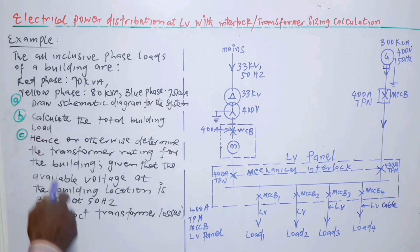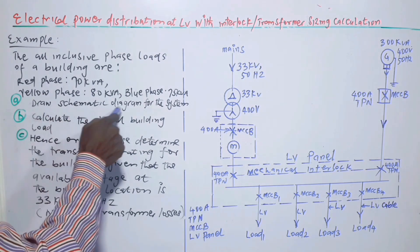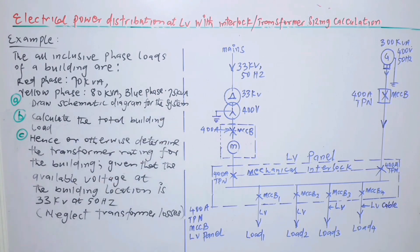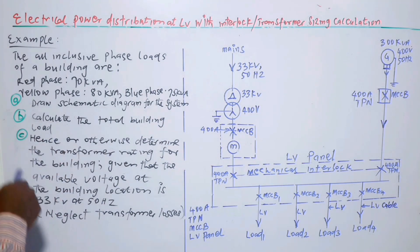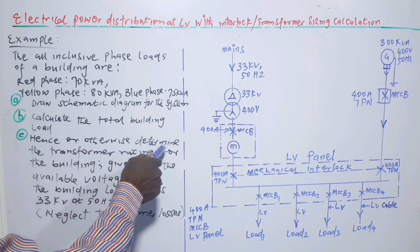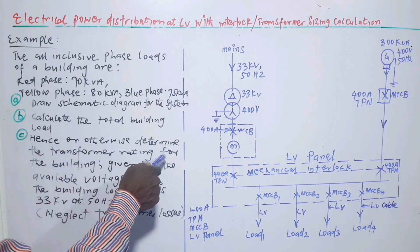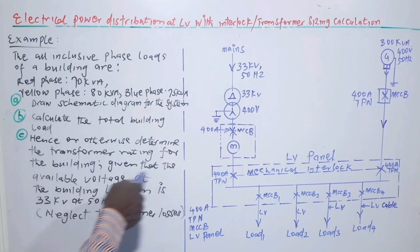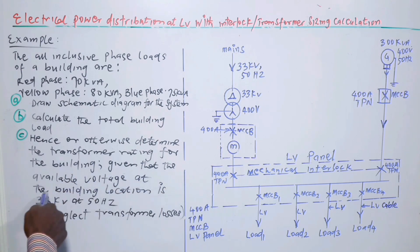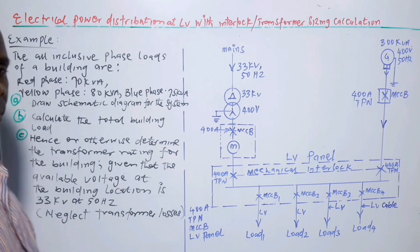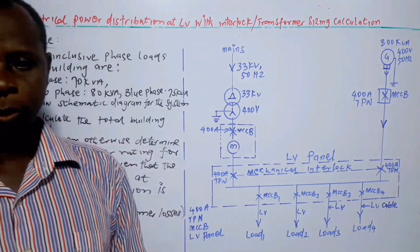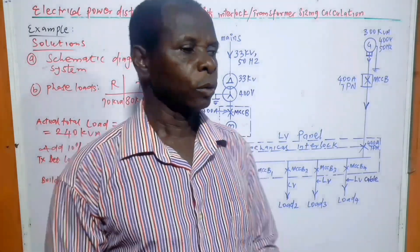Then the A part of the question is draw schematic diagram for the system. B calculate the total building load. C hence or otherwise determine the transformer rating for the building, given that the available voltage at the building location is 33 kV at 50 Hz. Neglect transformer losses. So that is the question. Now, solution to the problem.